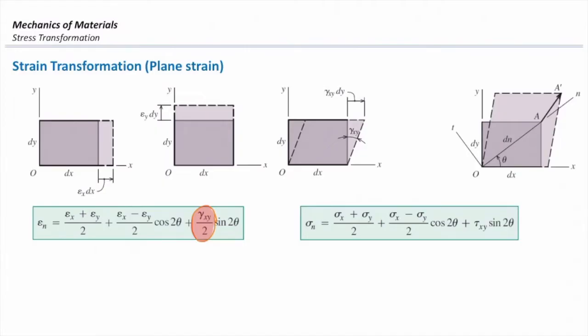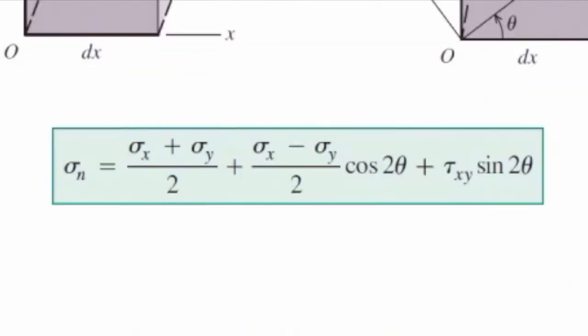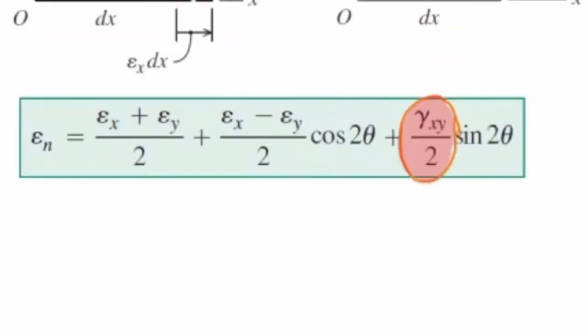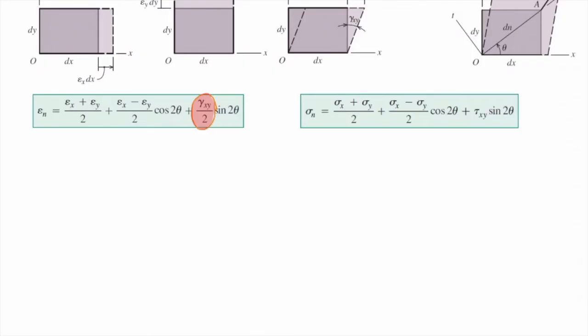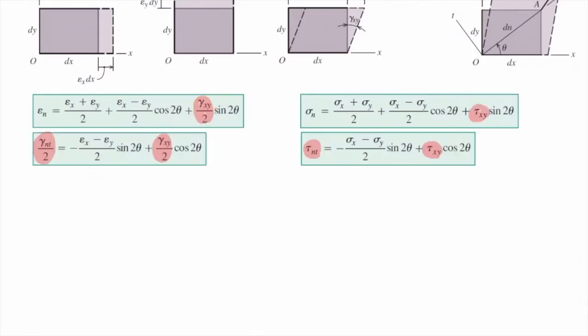The only difference between these two equations is this one. Instead of tau xy, instead of shear stress, I will use gamma xy over 2, half of shear strain. And this difference is repeated in all equations that you will see over here.